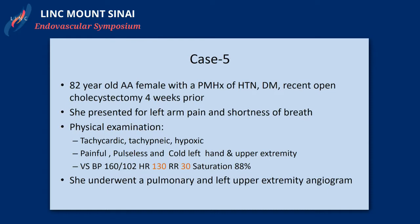The last case is an 82-year-old lady with multiple comorbidities who had surgery four weeks prior to admission and presented differently — with left arm pain and shortness of breath simultaneously. She was tachycardic, tachypneic, and hypoxic, but was mainly complaining of a painful, pulseless, cold left hand and upper extremity. Her blood pressures were stable, but she had tachycardia, hypoxia, and respiratory distress, and was rushed over after her cold arm was noted for evaluation.